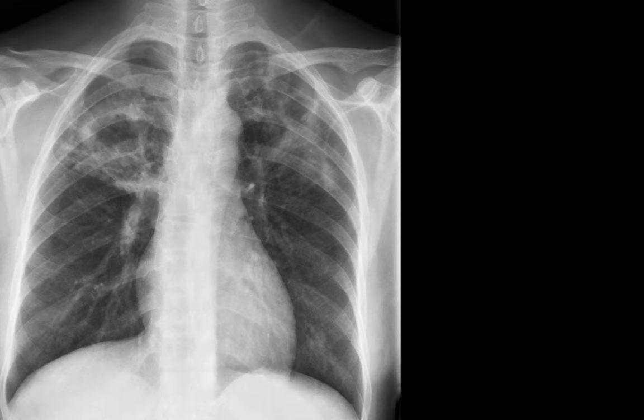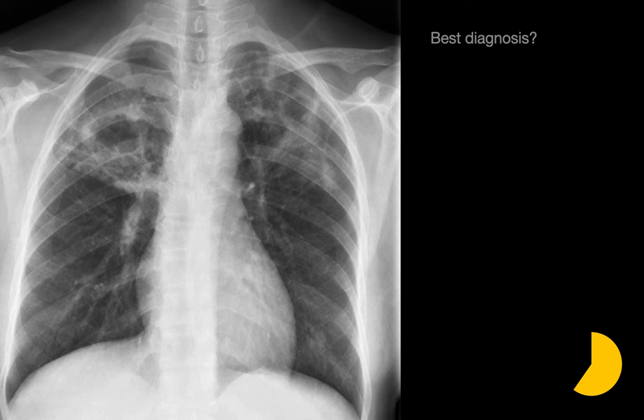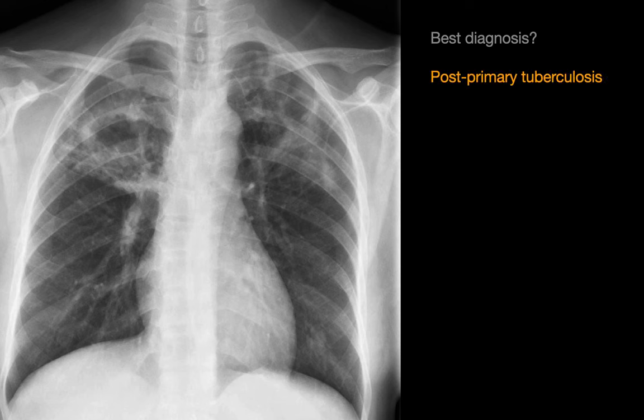These are thoracic radiology border view cases, and the topic of this group are infections. What's your best diagnosis? The best diagnosis for this case is post-primary or reactivation tuberculosis. TB mimics such as non-tubercular mycobacterial infections and endemic fungal infections can on occasion present with this reactivation TB pattern too.